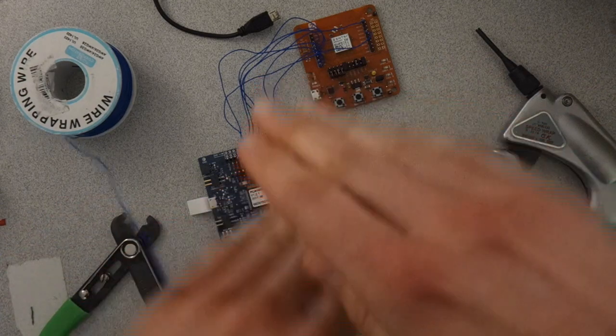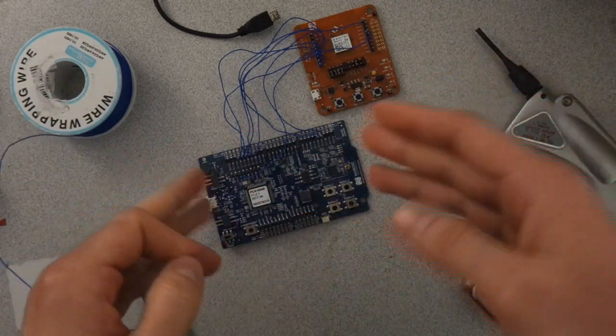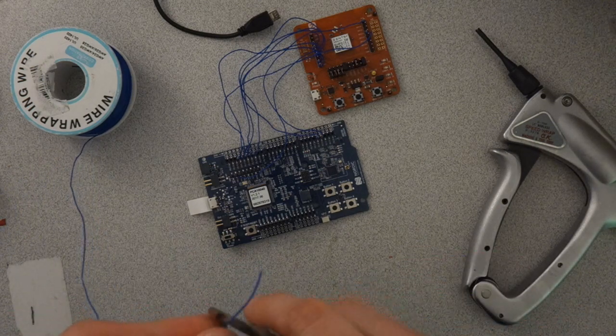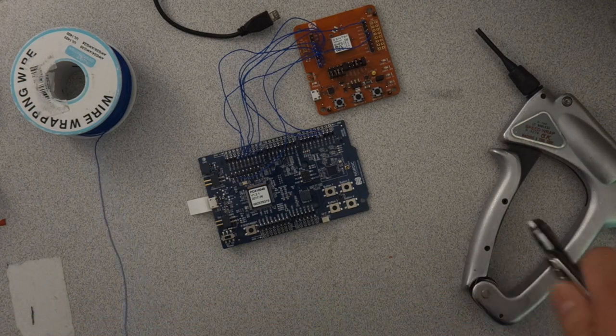First thing is making sure that your circuitry is not powered. An easy way to destroy any type of circuitry that you're working on is to start making connections while it's still powered.